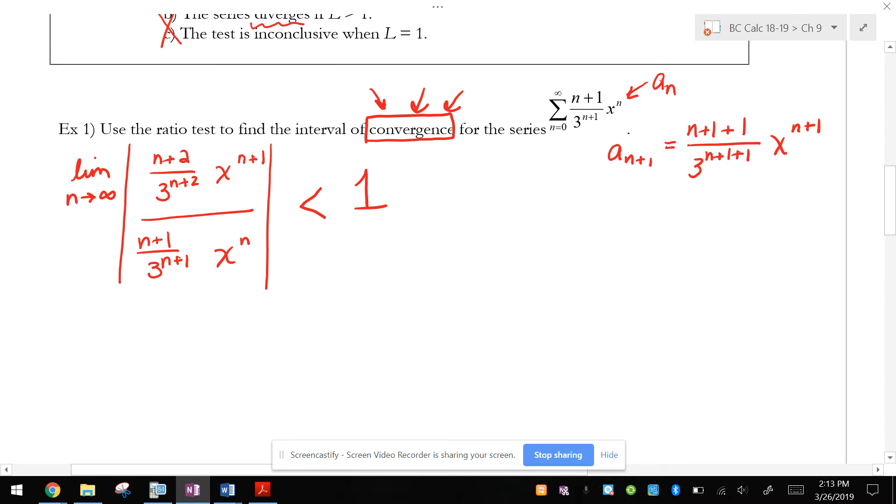Now, these are two nasty fractions, so it's a lot easier if I think of this division as a product. So this is really n plus 2, x to the n plus 1 over 3 to the n plus 2, times the reciprocal of the bottom, which would be 3 to the n plus 1, divided by x to the n, n plus 1. And then I set that less than 1.